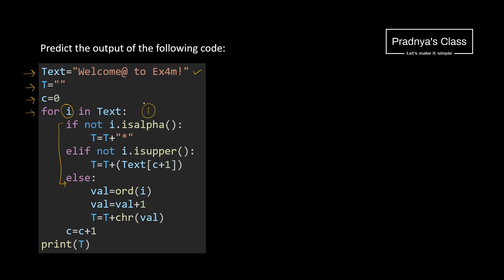Let's check out the first condition: when the character is not an alphabet, then star will get concatenated to the previous string. What's the second condition? If the character is not uppercase, then we will be adding 1 to the value of C, which is initially zero. And based on that index value we will consider the character that gets concatenated to the previous string.